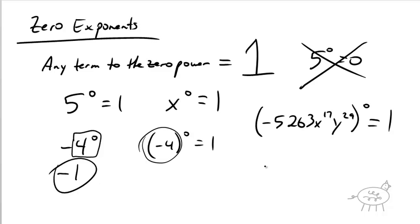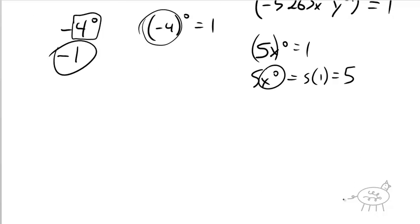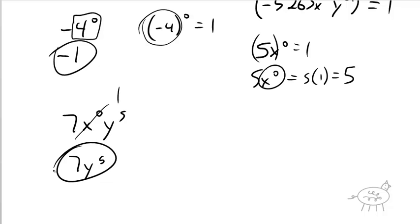Let me show you a couple more things. If I said 5x to the zero power, that's not equal to one — the only thing touching the zero power is the x. So it's 5 times one, which is 5. Very, very important: only the things that touch the exponent are affected. So if I said 7x to the zero times y to the fifth, the x to the zero is one, so the answer is 7y to the fifth. Anything to the zero power is one — got to remember that.